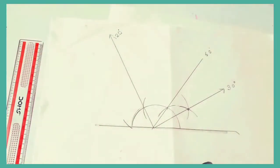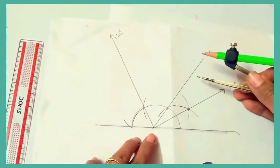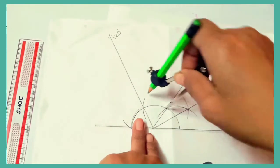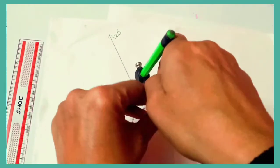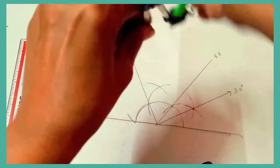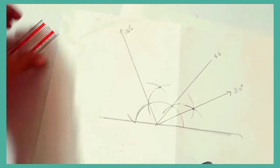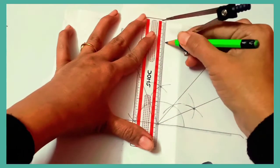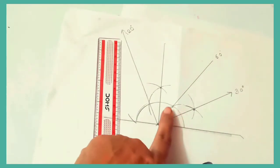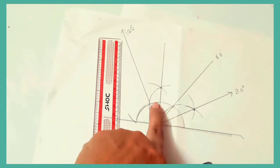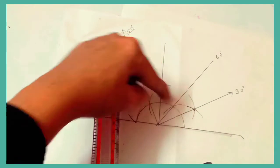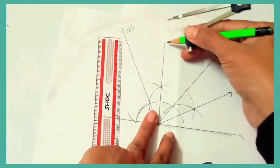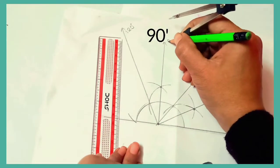Now we are going to make 90 degrees. Since 90 is between 60 and 120, we will bisect that angle. Using the same bisection method, cut an arc upward and then another in the opposite direction. Join the intersection point to the initial point. You can see: 30 plus 30 plus 30 plus 30 — this straight angle adds up to 90 degrees. So we can mark this as our 90 degree angle.